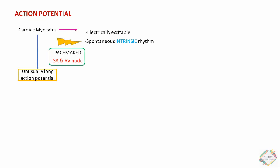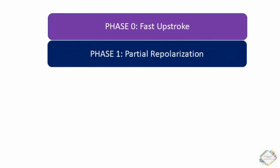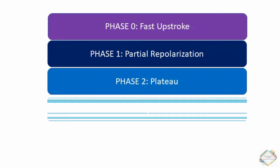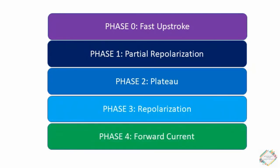The phases of the action potential include phase 0 (fast upstroke), phase 1 (partial repolarization), phase 2 (a plateau stage), phase 3 (repolarization), and finally phase 4 (forward current).